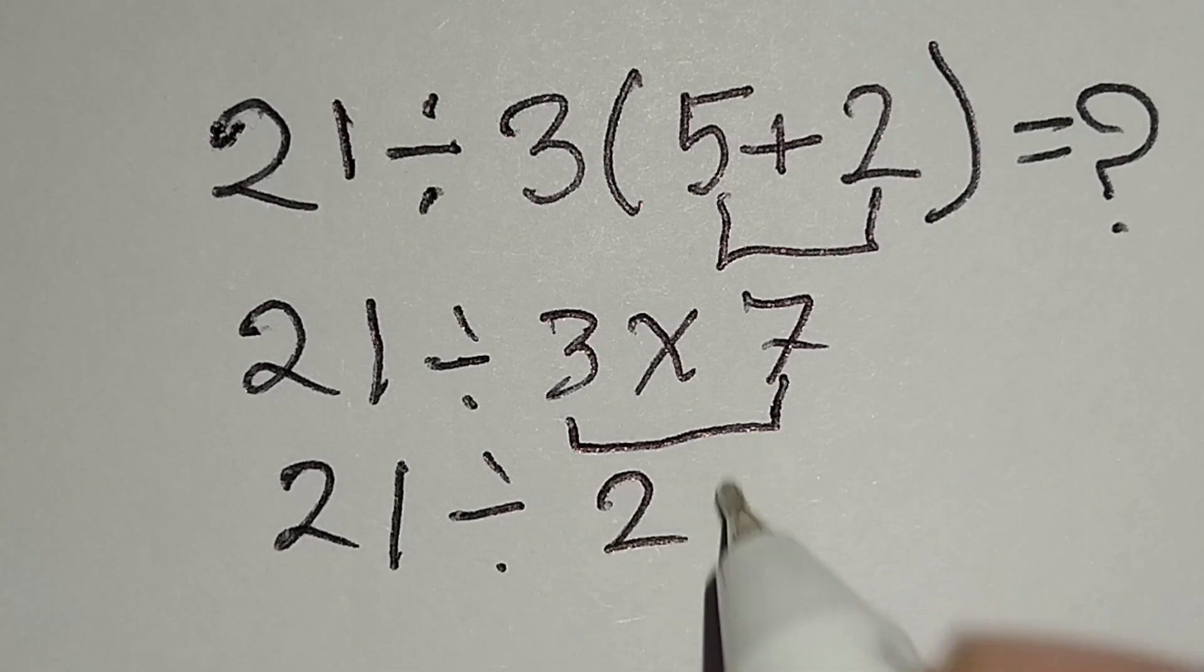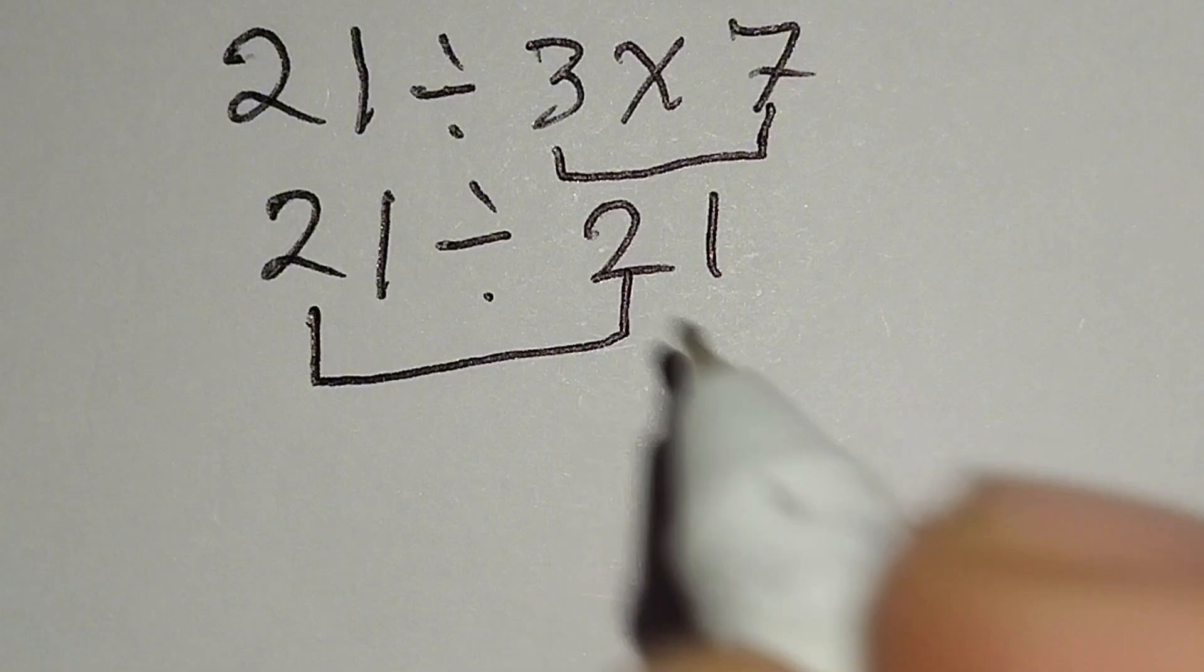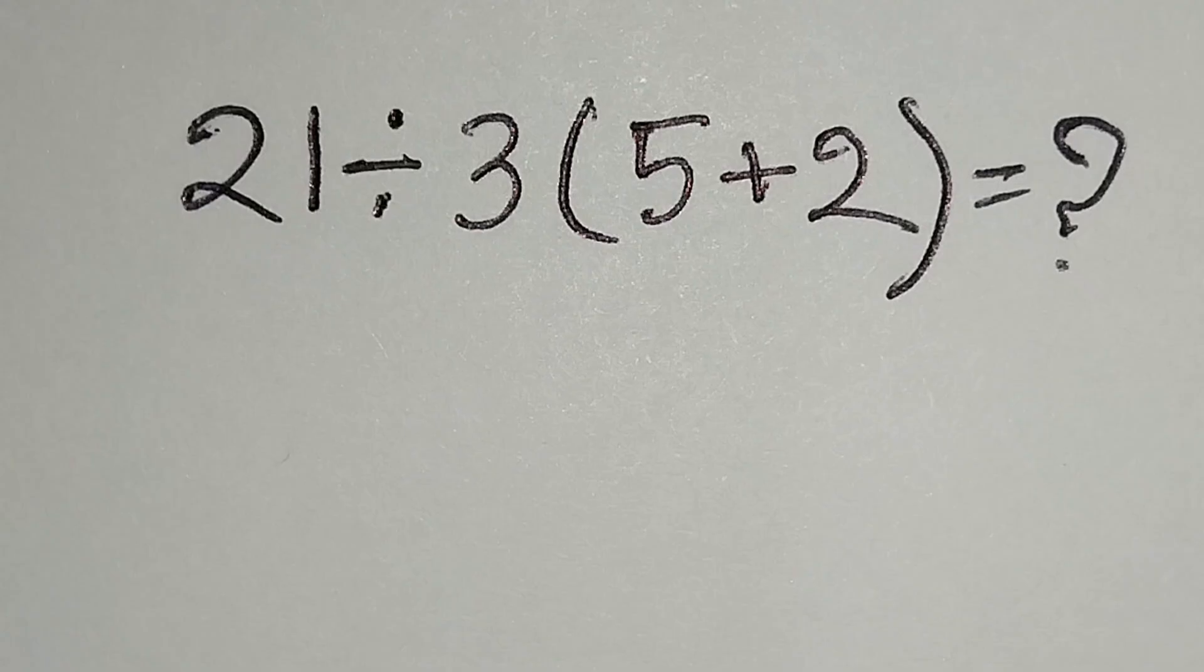gives us 21. 21 divided by 21 gives us 1, but it is not correct. Now I will apply...